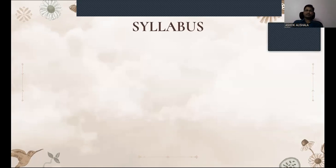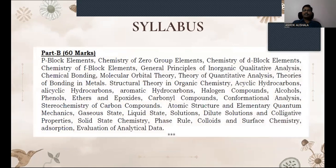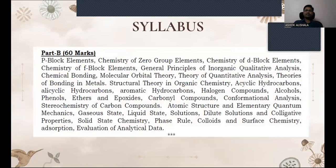Part B consists of D-block elements, chemistry of zero group elements, chemistry of F-block elements, chemistry of P-block, general principles of inorganic qualitative analysis, chemical bonding, molecular orbital theory, theory of quantitative analysis, theories of bonding in metals, and structural theory.